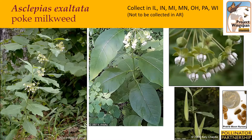Asclepias exaltata, or poke milkweed, grows in woodland openings and edges. It grows two to six feet tall and is usually unbranched. Its leaves are broadly ovate and may be slightly wavy along their edges. They grow about three to six inches long and up to three inches wide. Both the tips and the bottoms of the leaves taper to a point, sitting on long petioles and arranged opposite along the stem. The flowers are bicolored, with green or pale purple petals and hoods that are white or light pink, forming very loose, open umbels two to four inches across. Their fruit are also spindle-shaped, four to six inches long, and covered in downy hairs.